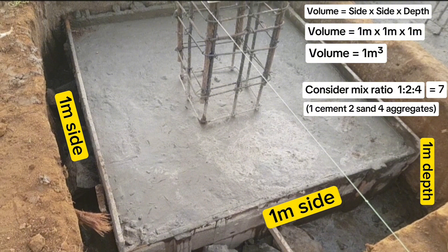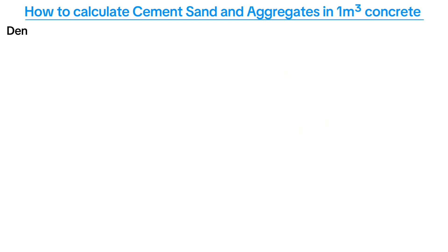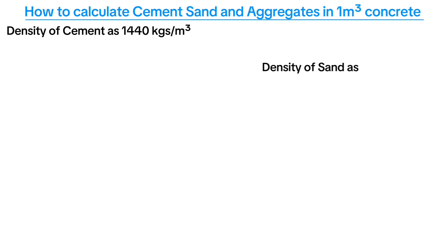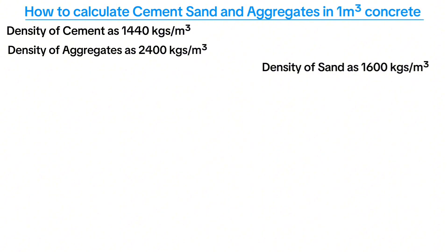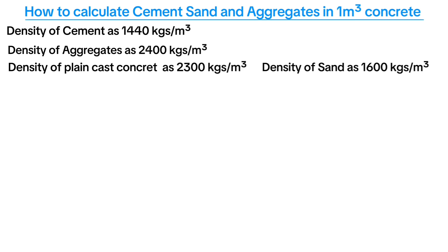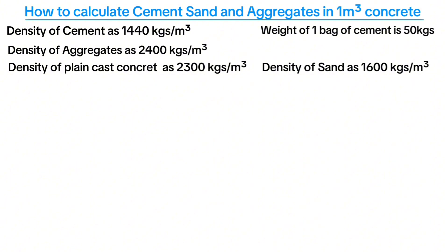When finding out cement, sand and aggregates quantity required for 1 cubic meter, you have to first note down their densities. Density of cement is 1,440 kg/m³, density of sand is 1,600 kg/m³, and density of aggregates is 2,400 kg/m³. The density of plain cast concrete is 2,300 kg/m³. Also note that one bag of cement weighs 50 kilograms and has a volume of 0.035 cubic meters.